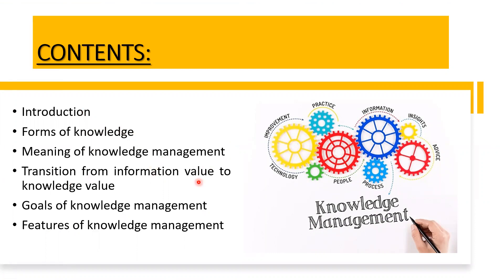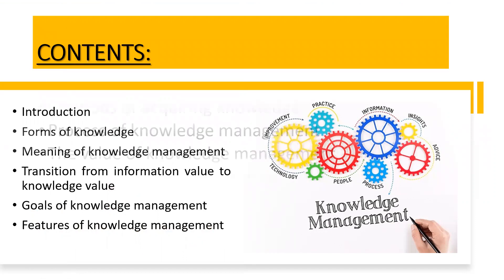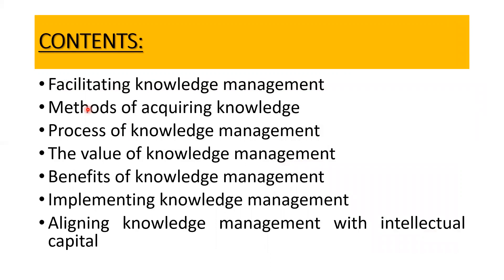We have discussed the transition from information value to knowledge value — how an individual's personal knowledge can become organizational knowledge. We discussed the two-way movement from implicit knowledge to explicit knowledge. We have also understood the different goals and objectives of knowledge management, and in the previous lecture I explained the features of knowledge management. Today I will give you a quick recap on the features and then we begin with a new topic.